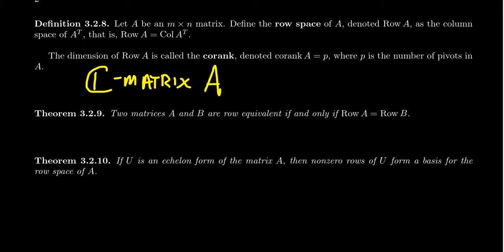So if you have a complex matrix A, the row space definition modifies to become the column space of A star, the conjugate transpose, which is the transpose but also with conjugation. The columns of A star are not exactly the rows of A — they are, but there's also conjugation. Therefore, when you calculate the row space of a complex matrix, you take the span of the conjugates of the rows of A.